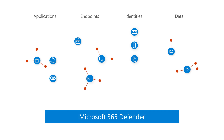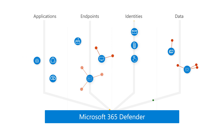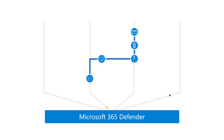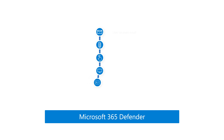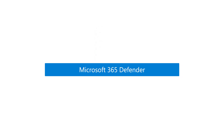Microsoft 365 Defender is an integrated cross-domain threat detection and response solution. It provides coordinated, automatic defense across all service domains to block threats before they become attacks. To reduce signal fatigue, it automatically normalizes raw signal data from those domains, analyzes that data, and correlates it into incidents — providing context so security teams can understand the story that the alerts are telling them, all in one dashboard that requires no specific expertise or customization.